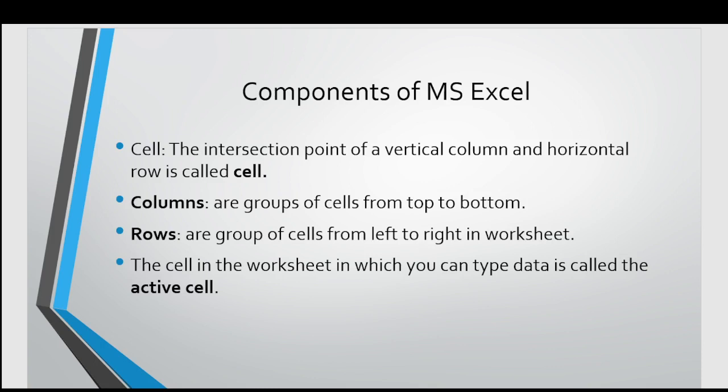Now, what are columns? Columns are groups of cells from top to bottom. And rows are groups of cells from left to right in a worksheet. The cell in the worksheet in which you can type data is called the active cell.